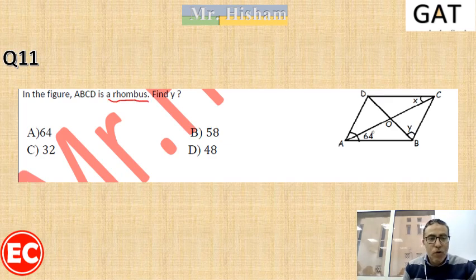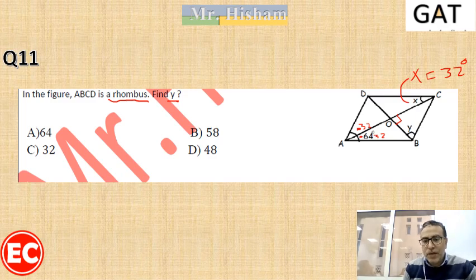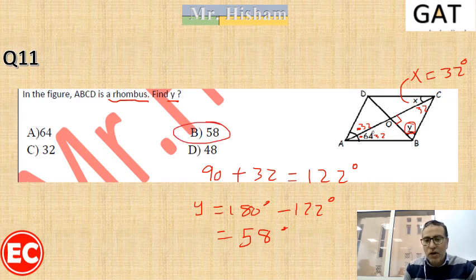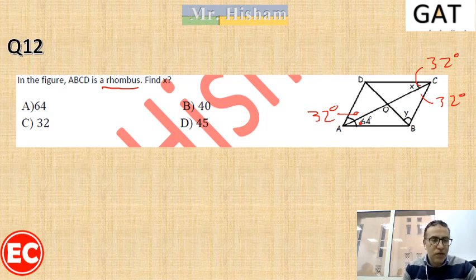In rhombus ABCD, find the value of Y. From the properties of the rhombus, the diagonal bisects the vertex angle, so each half-angle at that vertex equals 32 degrees. The diagonals are also perpendicular, so they meet at 90 degrees. In the triangle formed at the intersection, we have angles of 32 and 90, which sum to 122. So Y equals 180 minus 122, giving Y equals 58 degrees. Therefore X equals 32 and Y equals 58, and the answer is C.